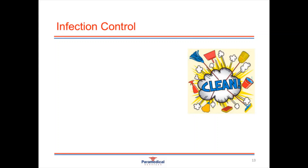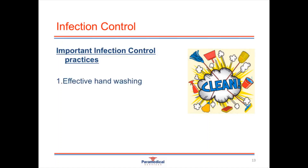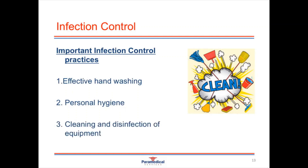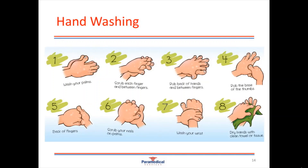Infection control practices are very important for breaking the chain in the spread of disease. These include effective hand washing, personal hygiene, and cleaning and disinfecting equipment. As medical practitioners we'll come into contact with many different patients — some highly infectious, others very immunocompromised — so it's important we don't aid the transmission of disease. We need to wash our hands before and after contact with every single patient, using soap and running water, and disposable towels to dry our hands.